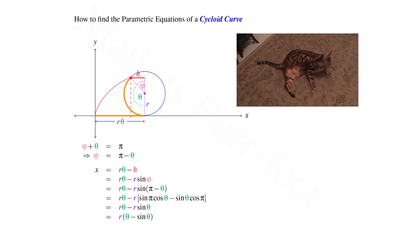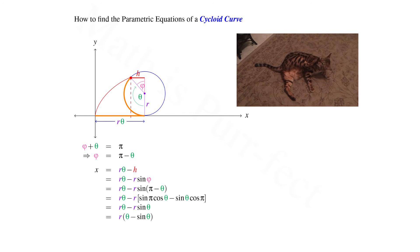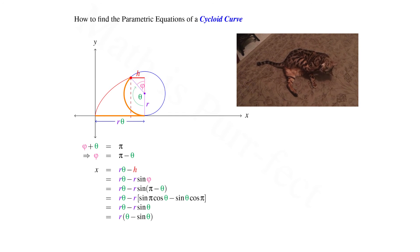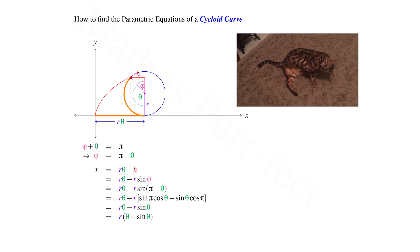Factoring out radius r, we have that the parametric equation for the x-coordinate is given by r times the quantity theta minus sine theta.